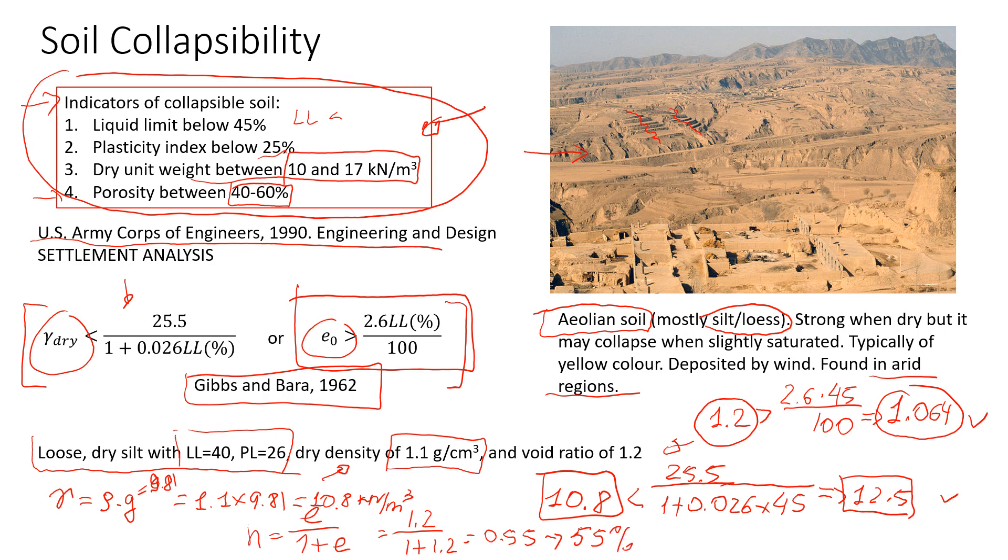Now let's see what we have. We have liquid limit 45. And it is less than 45, right? Yes, I'm going to put here plus. Plasticity index below 25. And we are given plastic limit 26. This is common mistake, guys. Make sure that you change to plasticity index, not plastic limit. Plasticity index, it's liquid limit minus plastic limit, which is 45 minus 26 will give us 14%, right? And it says it should be less than 25% here. We have 14 plus again.